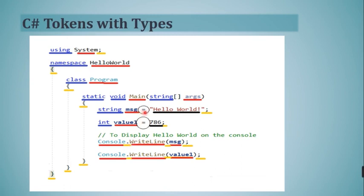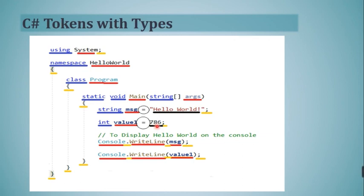The last type of token highlighted is literals, shown in black color. 'Hello World' and 786 are underlined — these are the only two literals used in this program. After discussing this example, you should have a clear concept of tokens and the kinds of tokens in C#.